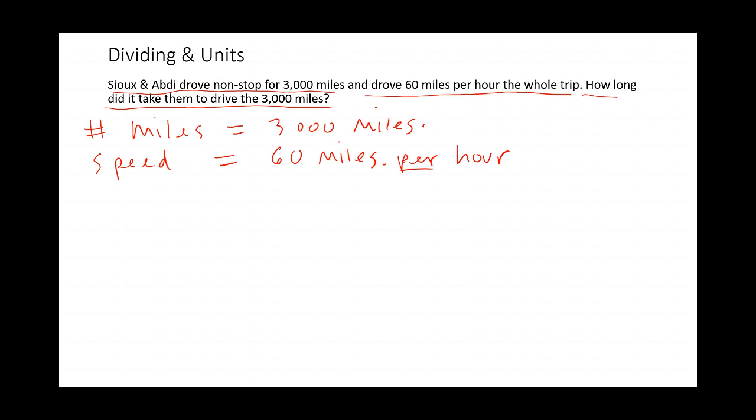Now in order to find out how fast they were driving, I need to take 3,000 miles and divide by the number of miles per hour. But watch what happens when we do this, and we're going to keep the units. So miles divided by, I'm going to write 60 miles. And I'm going to do a division bar because remember, per hour, that's one hour.